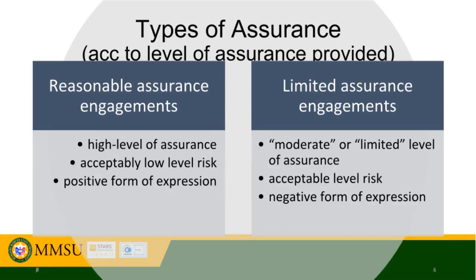There are two types of assurance engagements according to level of assurance provided: a reasonable assurance engagement and a limited assurance engagement. Reasonable assurance engagements provide a high, but not absolute, level of assurance. Limited assurance engagements provide only a moderate or limited level of assurance. The objective of a reasonable assurance engagement is a reduction in assurance engagement risk to an acceptably low level, while the objective of a limited assurance engagement is a reduction in assurance engagement risk to a level that is acceptable in the circumstances of the engagement.